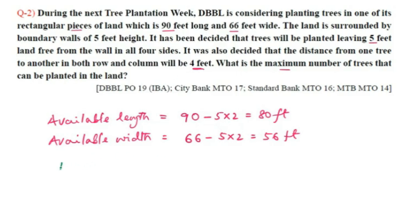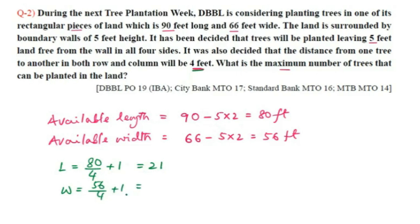For the length, total is 90 feet, so available length is 90 − 10 = 80 feet. With a gap of 4 feet between trees, the maximum number of trees along the length is 80 ÷ 4 + 1 = 21. Similarly, along the width: 56 ÷ 4 + 1 = 14 + 1 = 15. Therefore, total number of trees that can be planted equals 21 × 15.